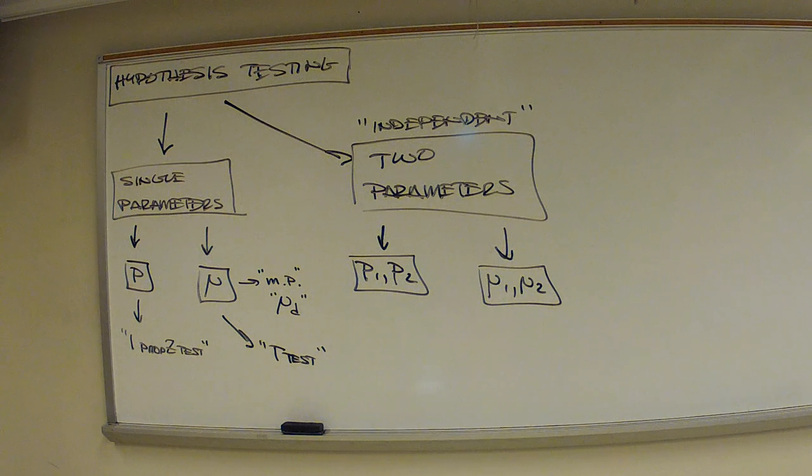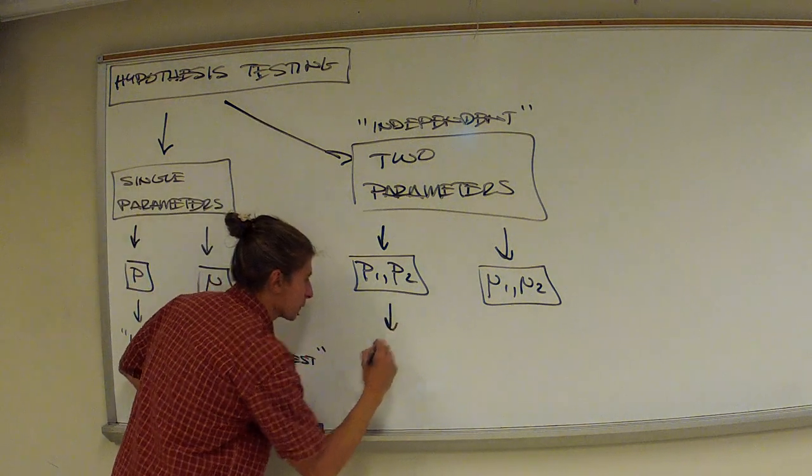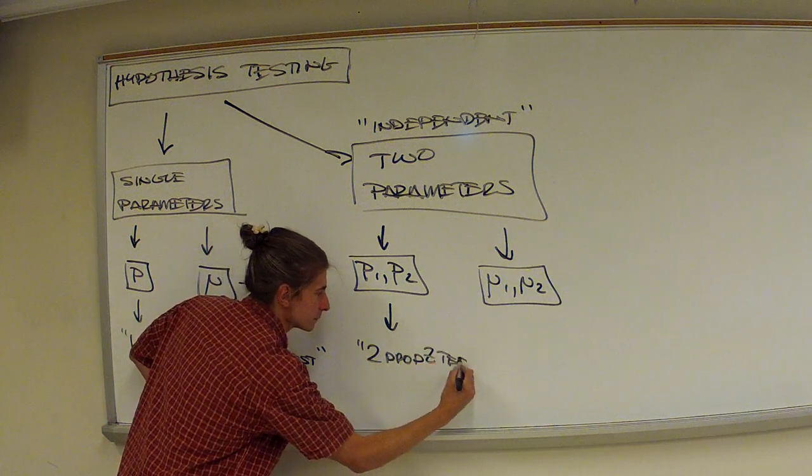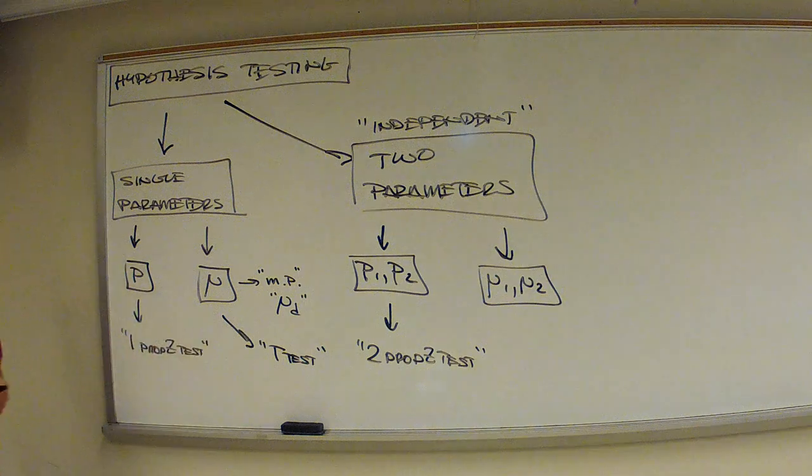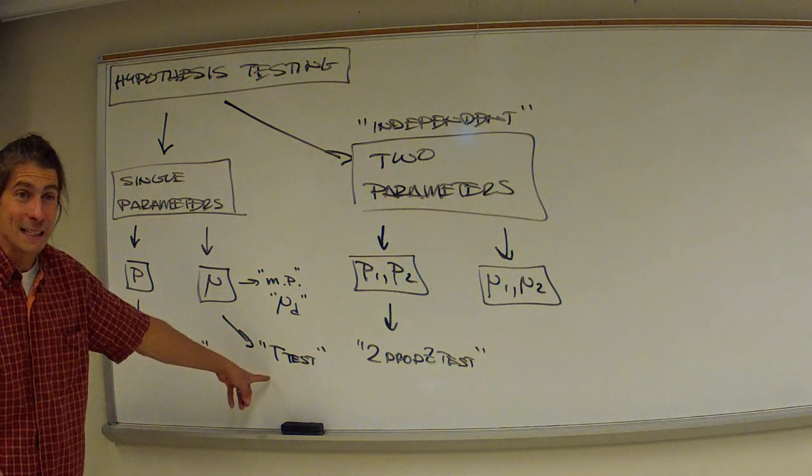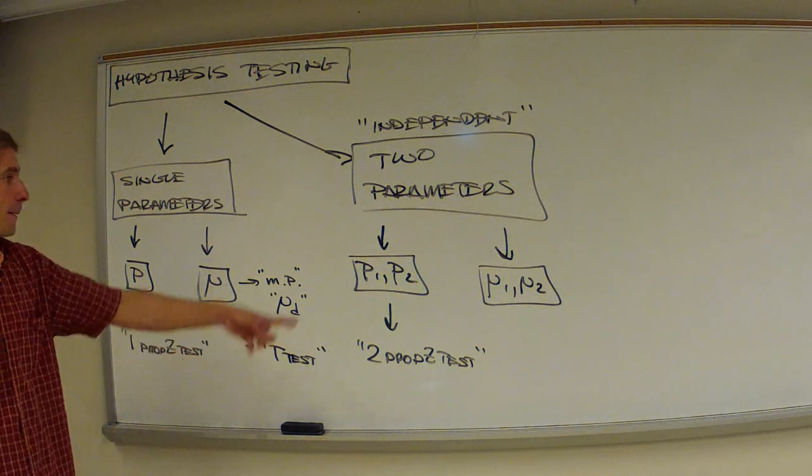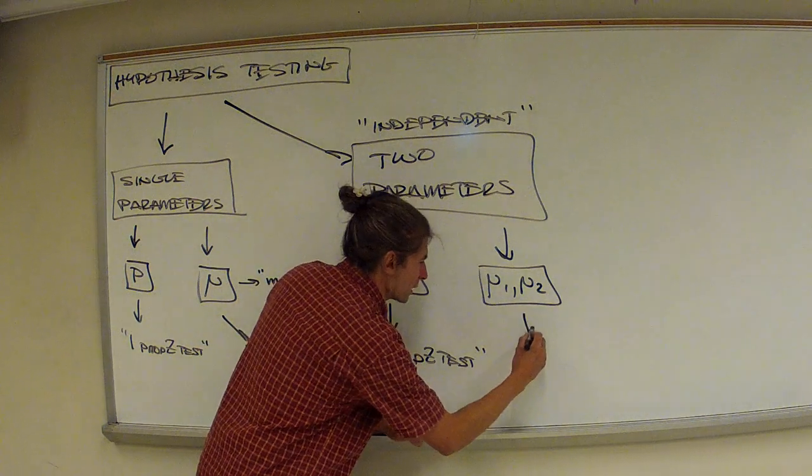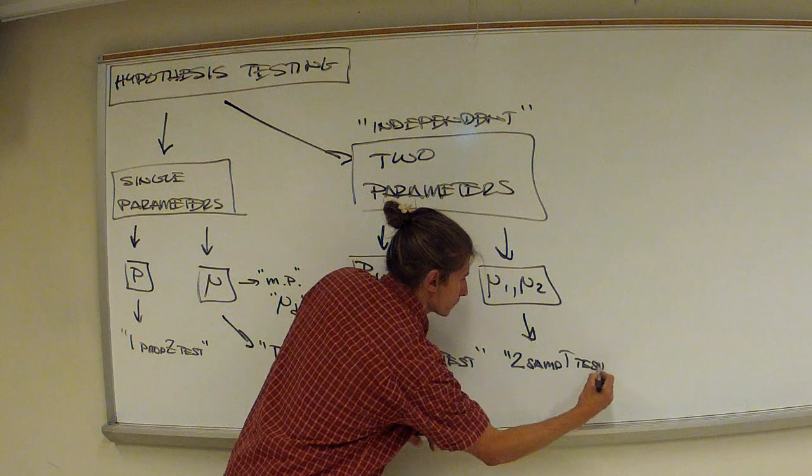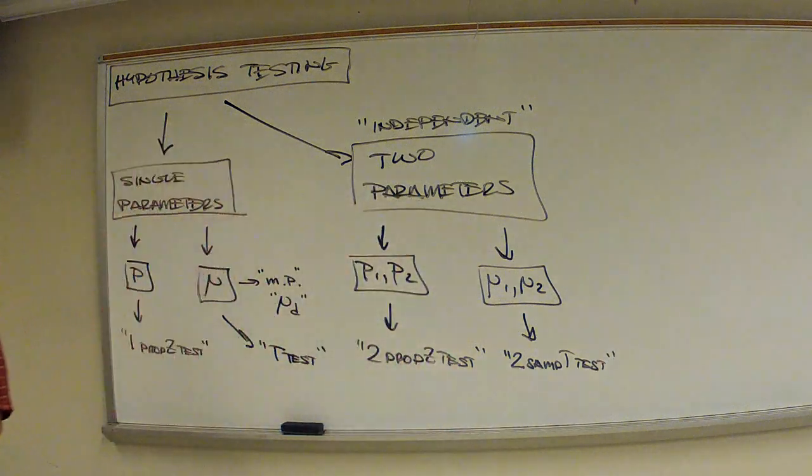So we still have two parameters, we had P1 and P2, and we had mu1 and mu2. Notice the correlation? This guy here, cleverly, two prop z-test. And all of these things, of course, have intervals associated with it. And this guy over here, this is the one that's a little bit of a strange title. It's called the two-samp t-test for two samples.